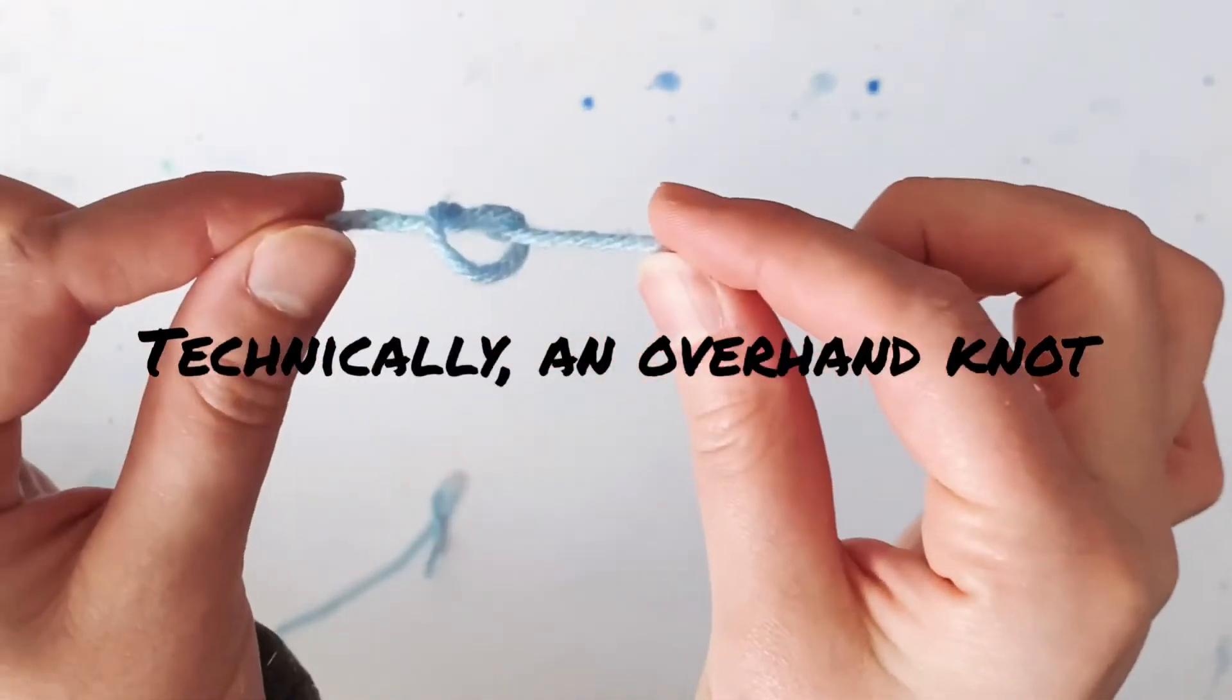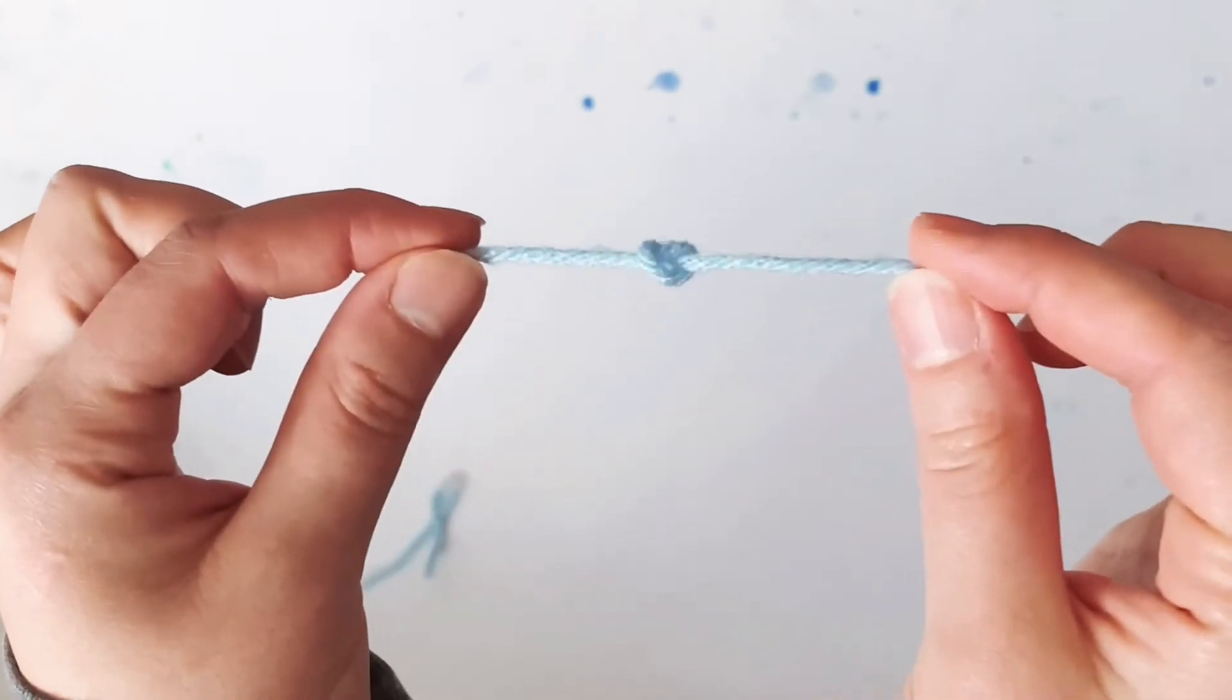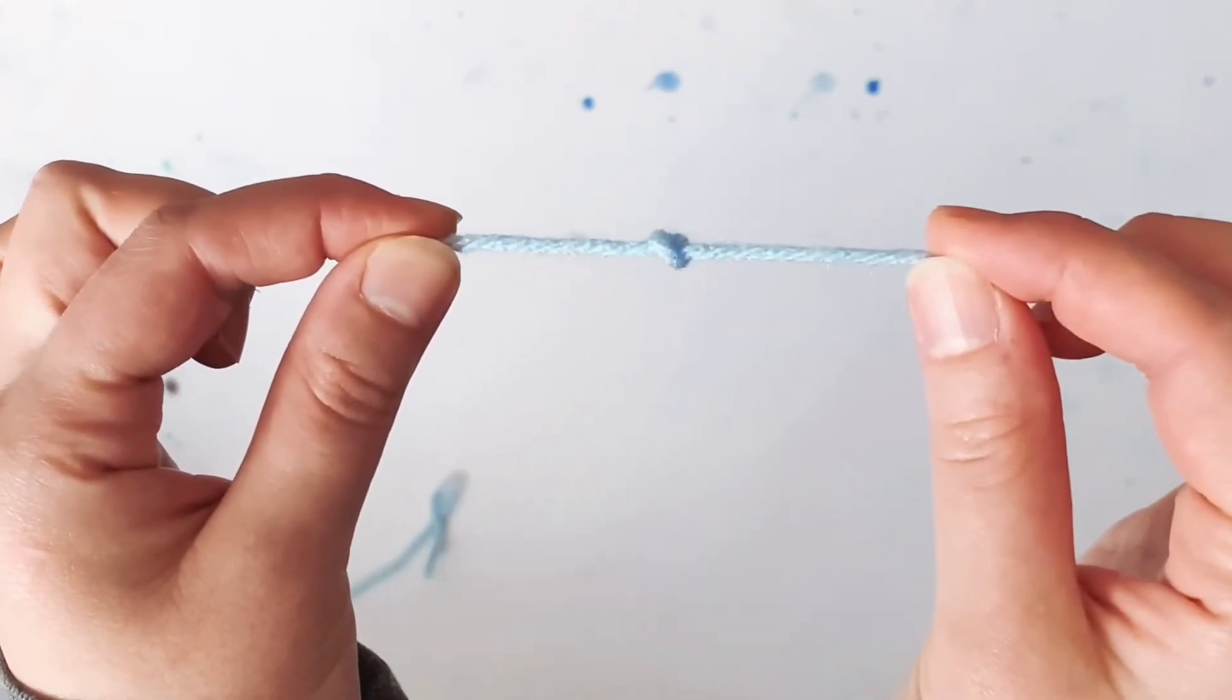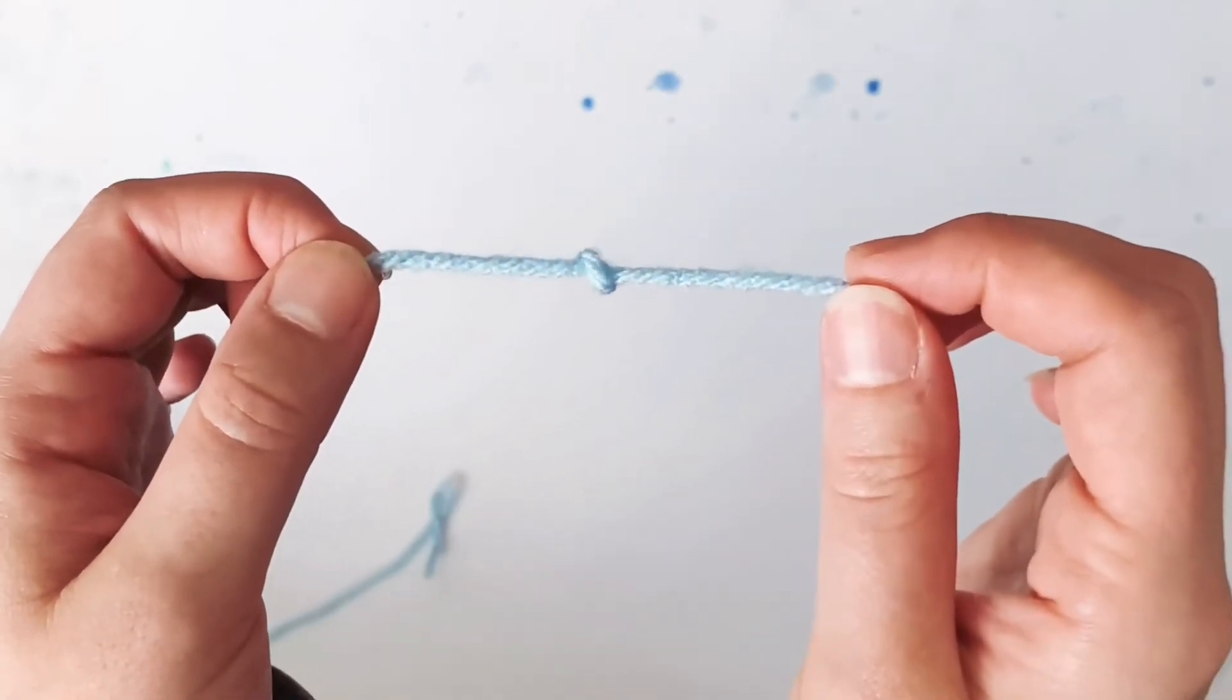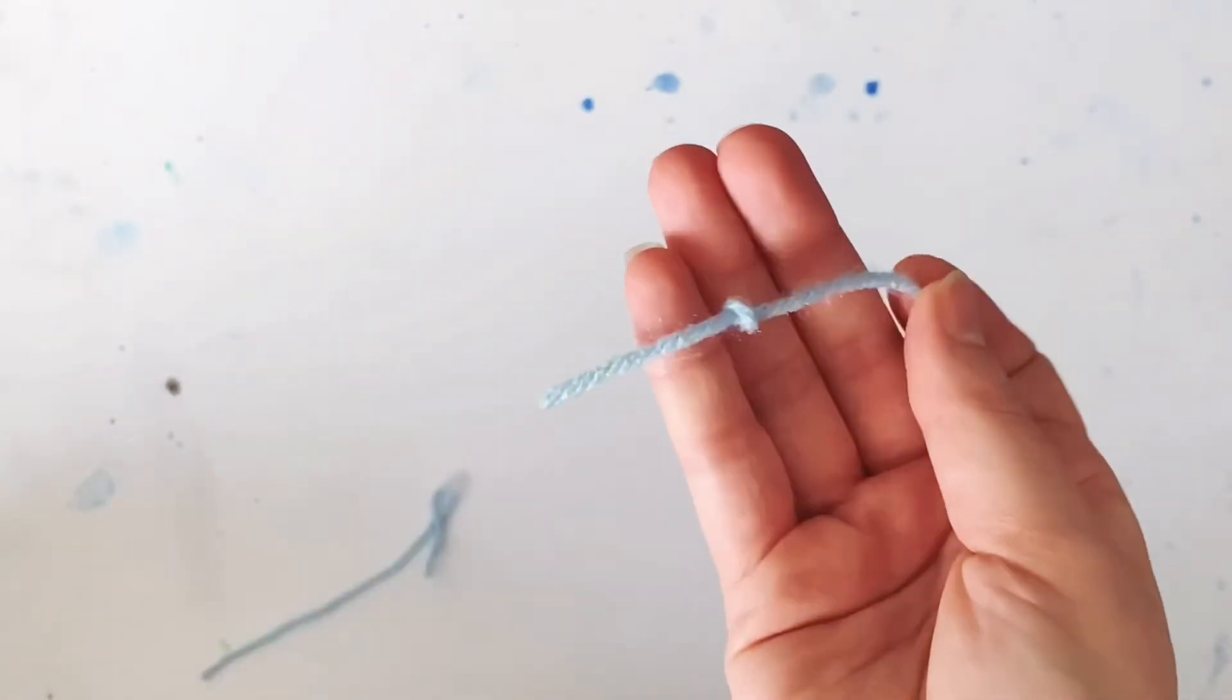This is the slip knot, compared with just your traditional square knot. In this case, if you pull it is not adjustable. It's not permanent, but if you pull too tightly it might be difficult to undo.